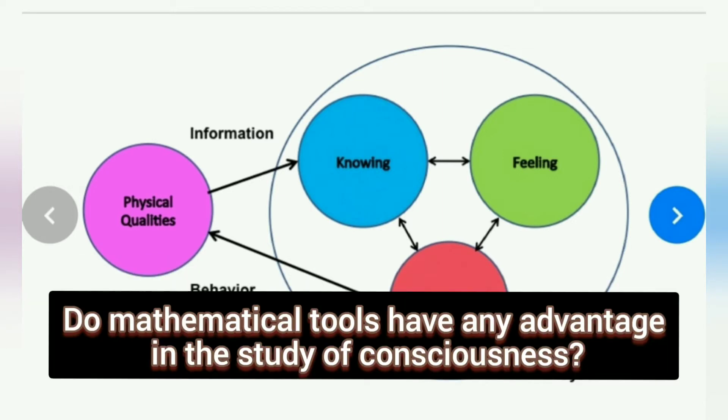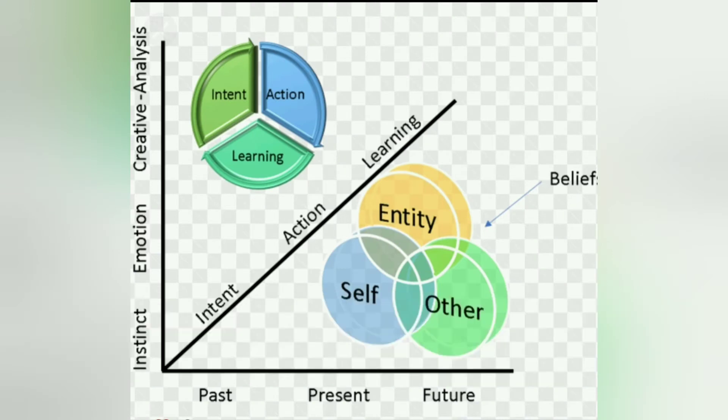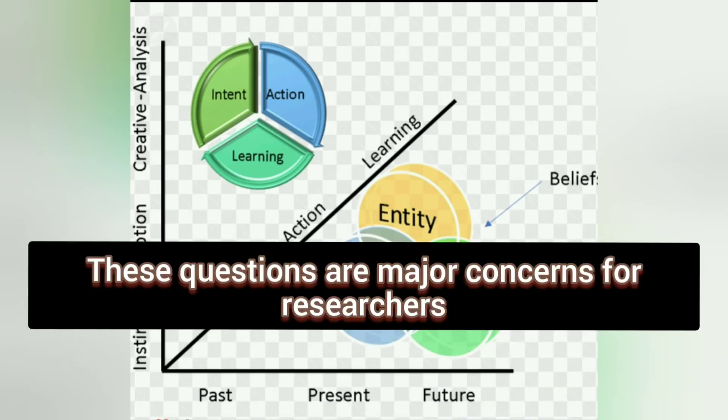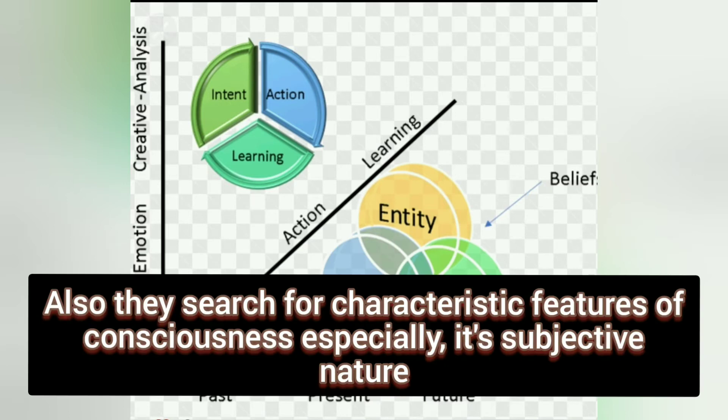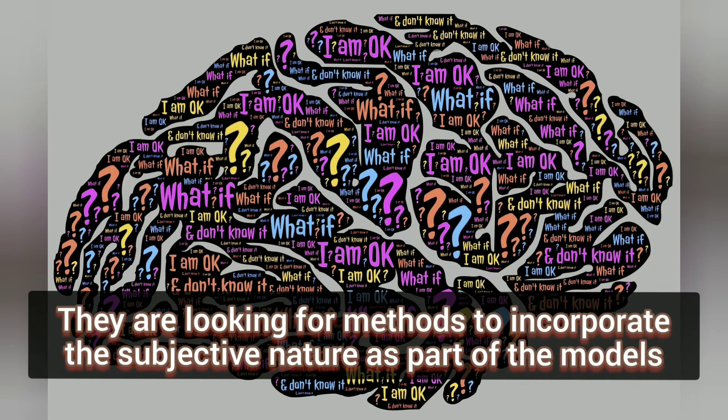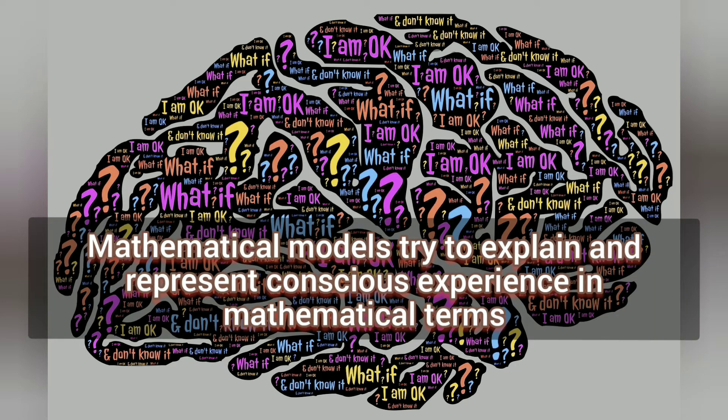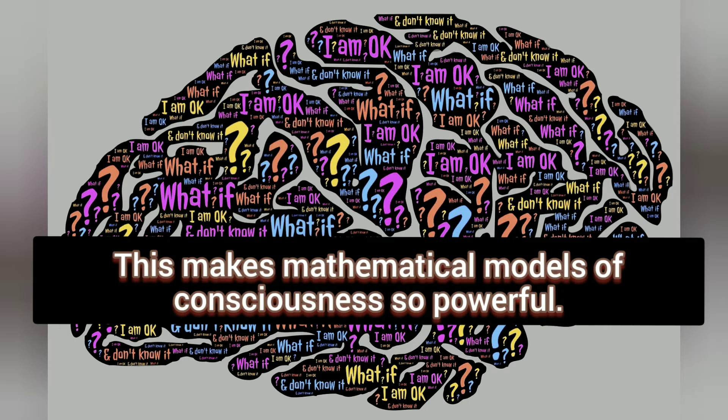Whether mathematical tools have any advantage in the study of consciousness? Are they better than non-mathematical methods? These questions are major concerns of researchers. Also, they search for characteristic features of consciousness, especially its subjective nature. They are looking for methods to incorporate the subjective nature as part of the models. Mathematical models try to explain and represent conscious experience in mathematical terms. This makes mathematical models of consciousness so powerful.